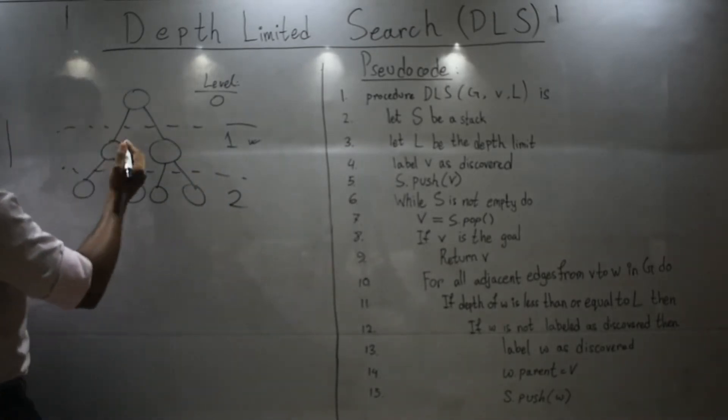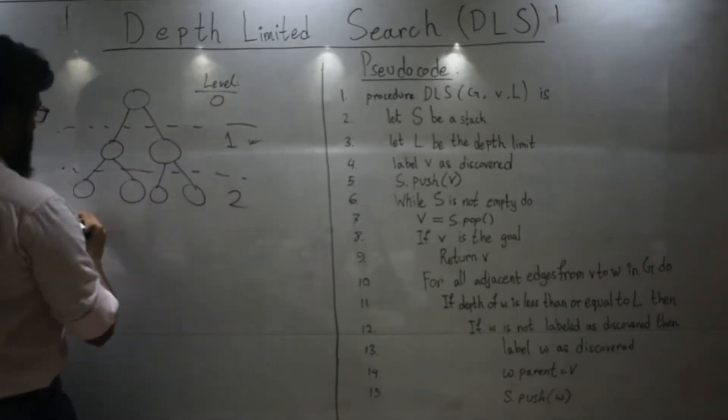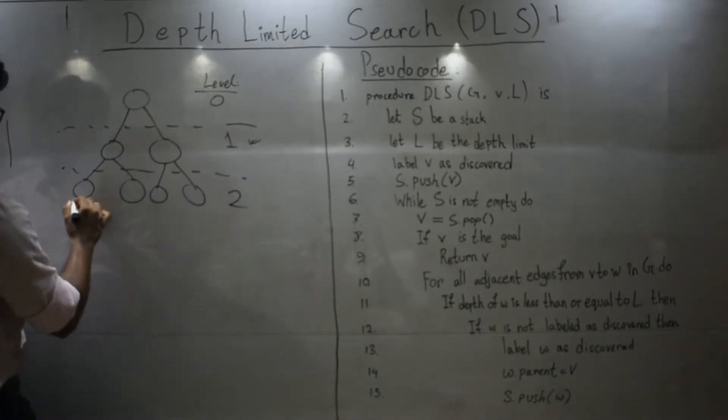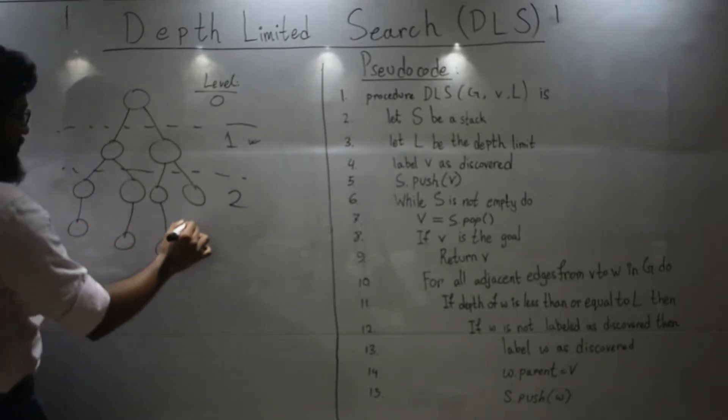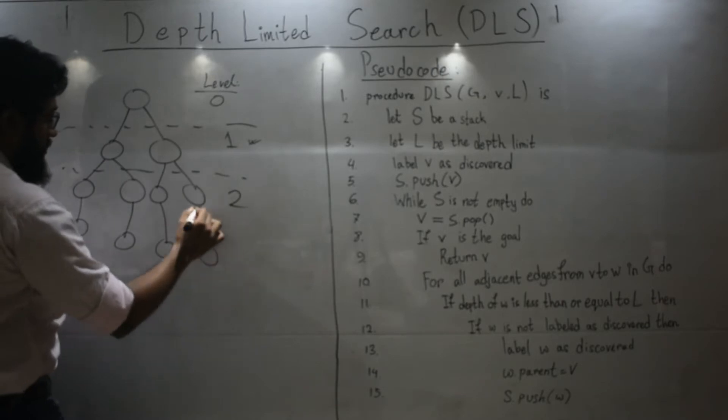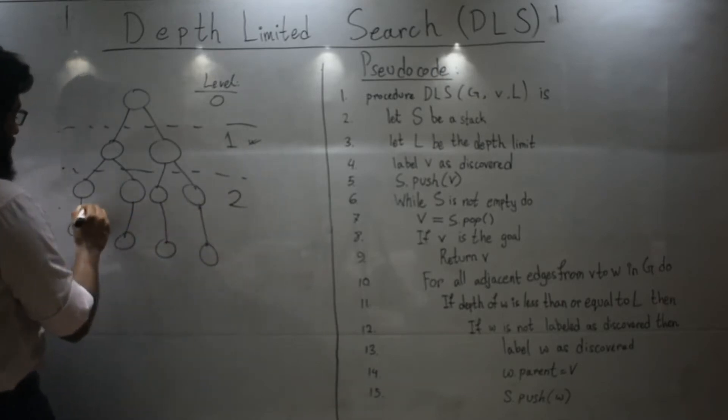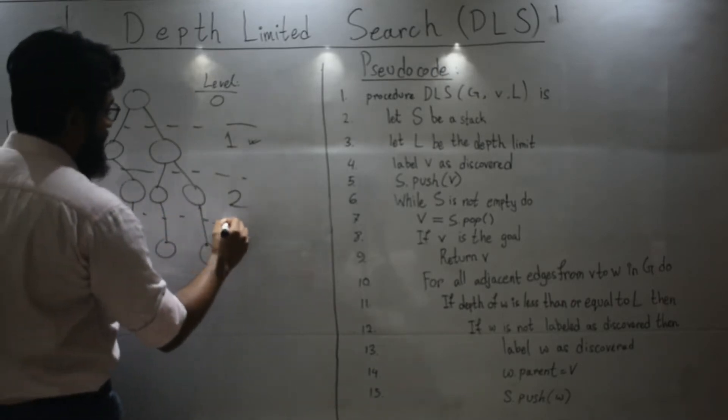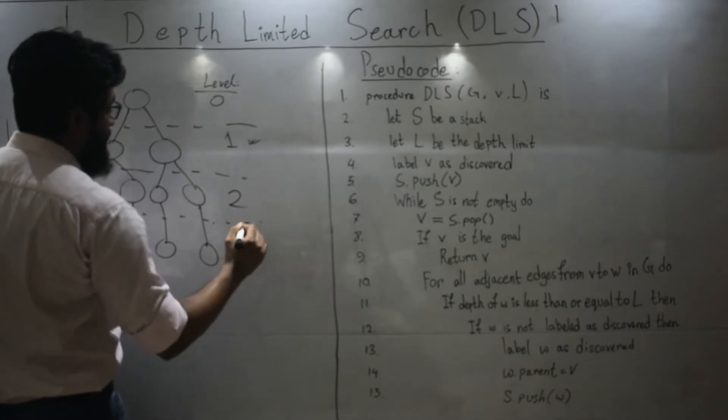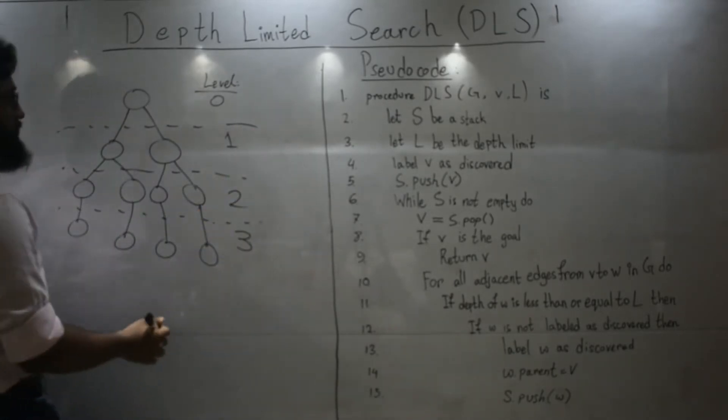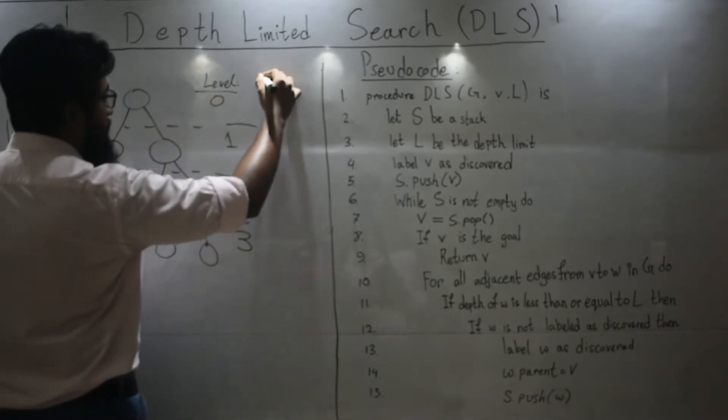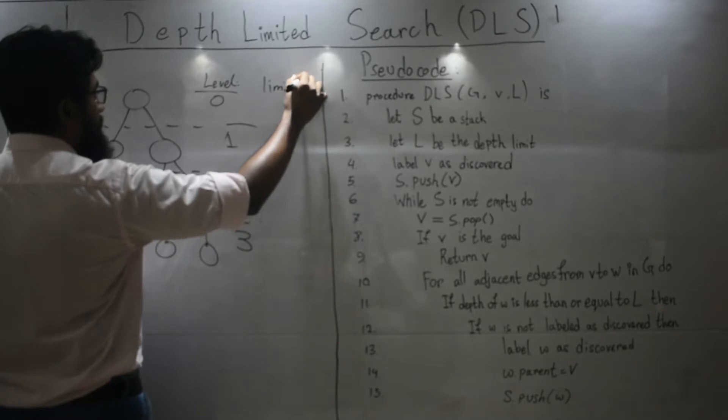So let's see how it happens. Let's add some more. These have a level of three. Now let's set a limit of, say, two.